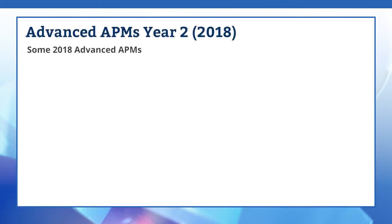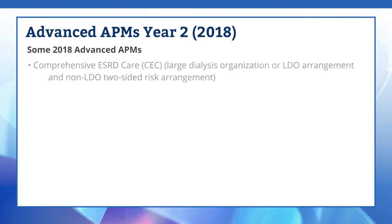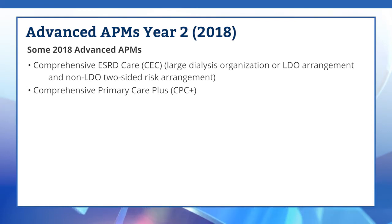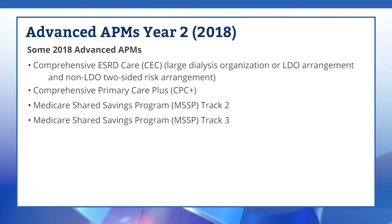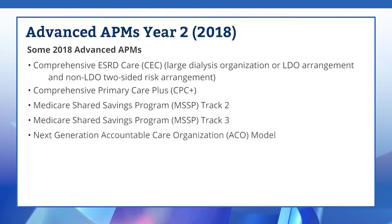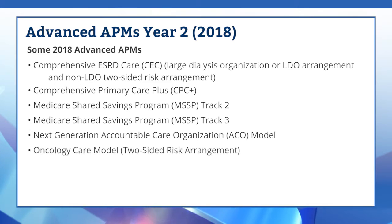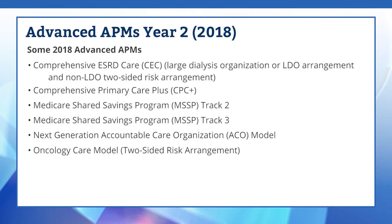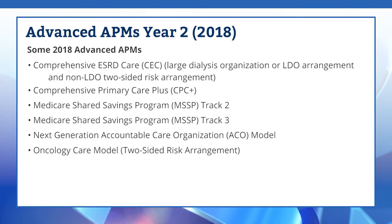Let's look at some of the 2018 Advanced APMs: the Comprehensive End-Stage Renal Disease Care Model, the Comprehensive Primary Care Plus (CPC+) Model, Tracks 2 and 3 of the Medicare Shared Savings Program, the Next Generation Accountable Care Organization (ACO) Model, and the Oncology Care Model with Two-Sided Risk Arrangement were all Advanced APMs for transition year 2017. Note that the Medicare Shared Savings Program Track 1 model is not currently considered an Advanced APM and therefore not eligible for the 5% bonus.